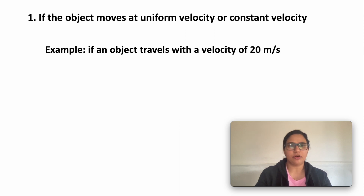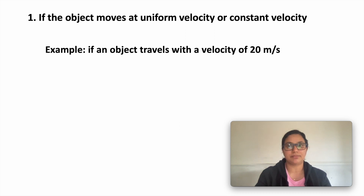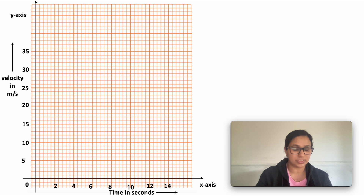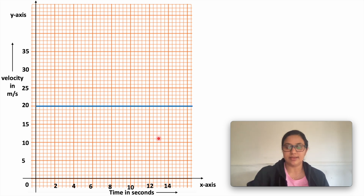First case: if the object moves at uniform or constant velocity. What do we mean by that? The velocity or speed is not changing with time. For example, if an object travels with a velocity of 20 meters per second, the nature of the graph is a straight line that is parallel to the x-axis.